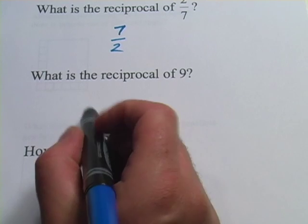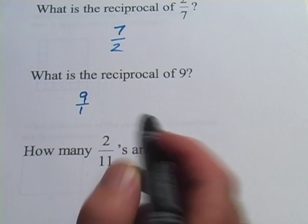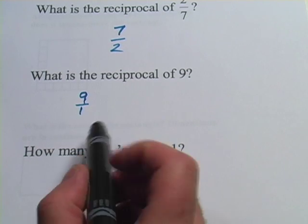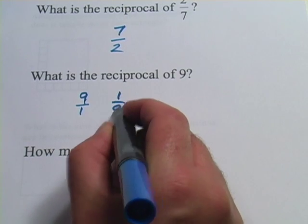Well, any whole number like this, any integer, can be written as a fraction. It's just 9 over 1. You can think of that as 9 ones, which is 9. And then to take the reciprocal of that, we would get 1 ninth.